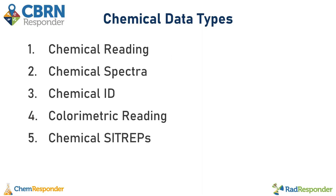We have five different chemical data types in ChemResponder. These are data types specific to chemical incident response, so if your event is enabled for the chemical hazard type, you'll have these five data types available: chemical reading, spectra ID, colorimetric reading, and chemical SITREPs. We're going to spend the most time on the chemical reading data type, because it's the most commonly used and it's a bit more involved than the others.